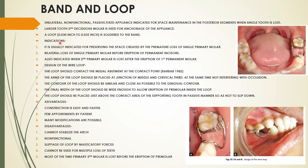As the name suggests, a band is placed on the deciduous molar. A loop made of 0.030 or 0.035 inch wire is soldered to that band.